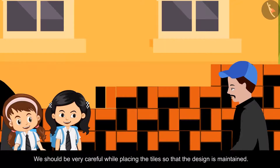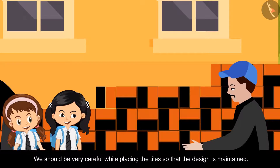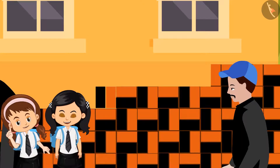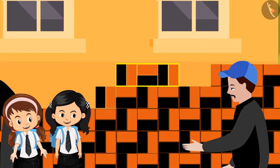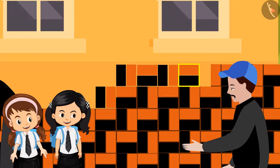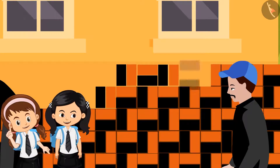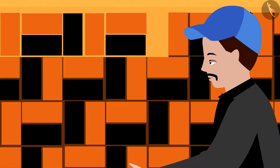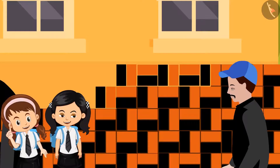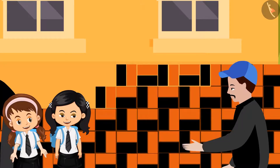Khushi's father explains: we should be very careful while placing the tiles — we have to make sure that the pattern is maintained throughout. He asks Mehek: look at this pattern very carefully and tell me, should I place this tile vertically or horizontally? Mehek answers: horizontally! Father confirms: yes, right — and this tile? Mehek says: horizontally again. Very good, the pattern is finished now.